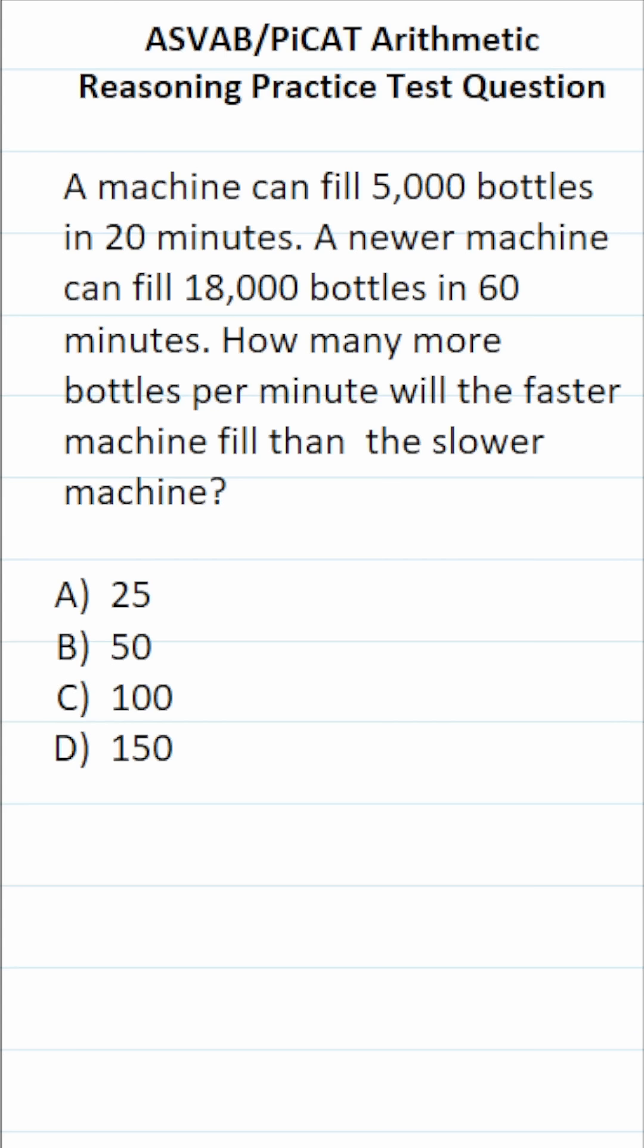So the first thing we have to do is determine how many bottles they can fill per minute. Let's start with this machine here that can fill 5,000 bottles in 20 minutes. To determine how many bottles it fills per minute, we'll take 5,000 and divide it by 20. Cross out these corresponding zeros. 500 divided by 2 is 250. In other words, this machine can fill 250 bottles per minute.